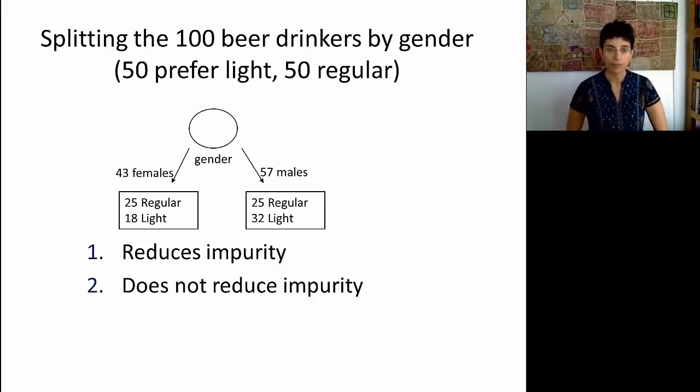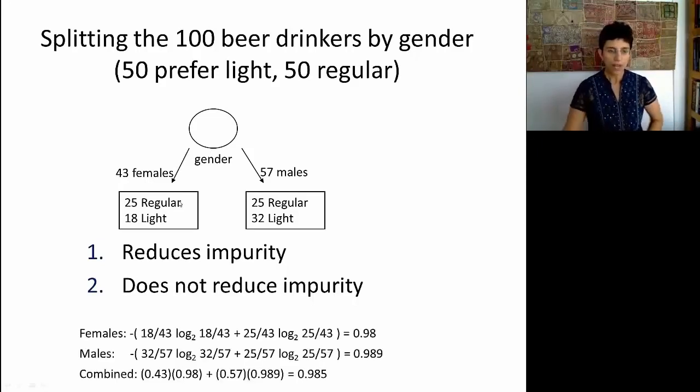Alright, let's look at the computation of entropy. So originally we have 100 people and broken down exactly 50-50, which means the original entropy is 1. What happens when we look at the females? When we look at the female node, we have 25 out of the 43 preferring light beer, so we have 25 over 43 times logarithm base 2 of that number. And we have 18 over 43 preferring the light beer, so we do the same thing with that number. When you add up all these numbers and take a negative sign, we get an entropy of 0.98. We can do a similar computation for the male node, and we'll get an entropy of 0.989.